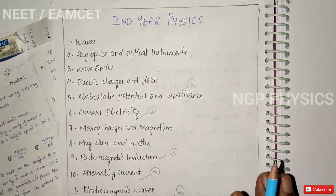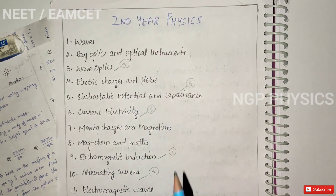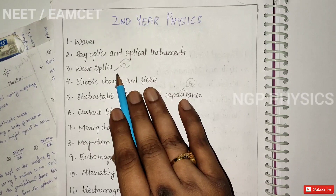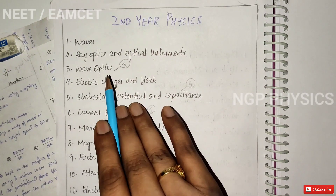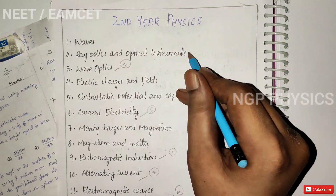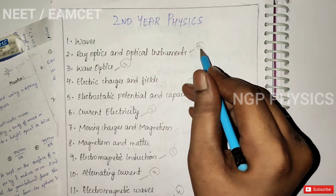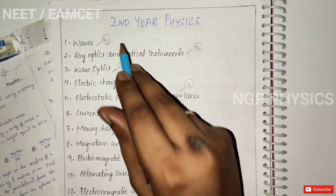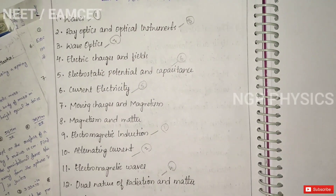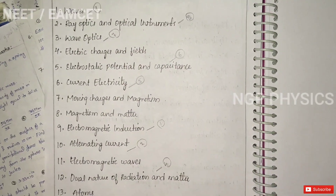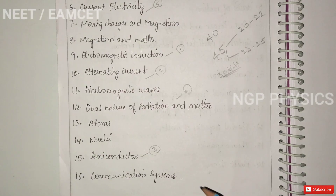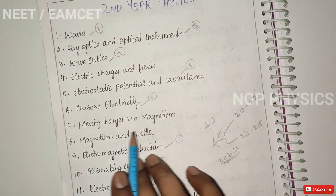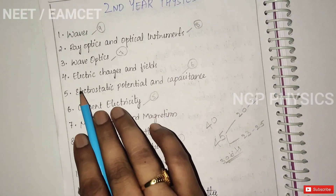The next topic is Wave Optics, covering diffraction and related concepts. First, practice these 9 priority chapters in order. The remaining chapters include Nuclei, Atoms, Moving Charges and Magnetism, Magnetism and Matter, and Electric Charges and Fields.